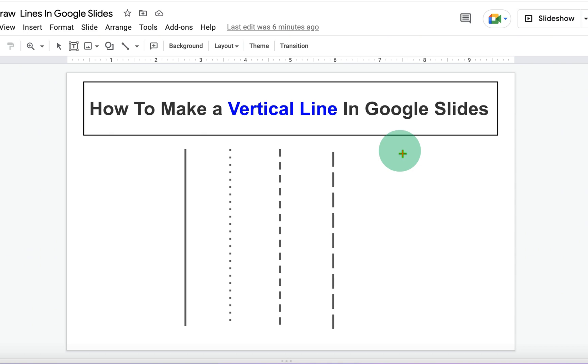Now to draw a straight vertical line, press Shift on your keyboard, hold the Shift button and then draw a line.